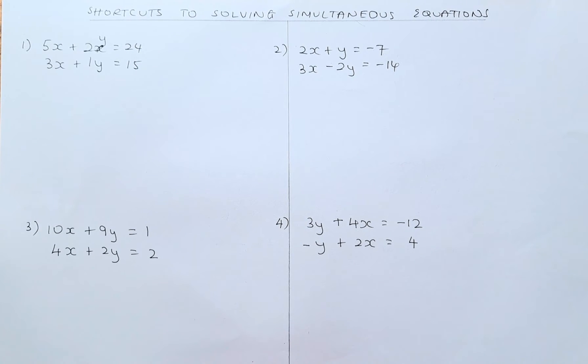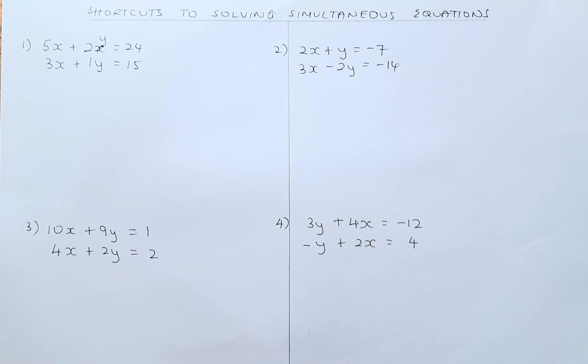So the first equation is: 5x plus 2y equals 24, and 3x plus y equals 15. So the trick is as follows.